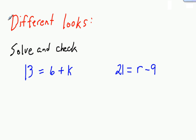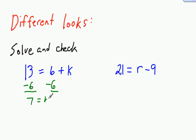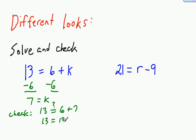Let's look at some equations that have different looks — where the variable is showing up on the other side of the equation. In this one, you have 13 equals 6 plus k. Since 6 is being added to k and we want to get k by itself, we subtract 6 from each side. We get 7 equals k. Checking: does 13 equal 6 plus 7? It does — so that one checks out.